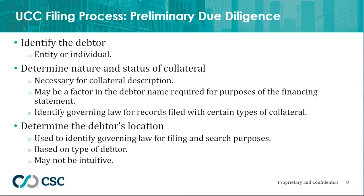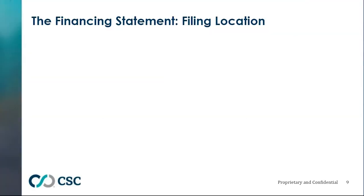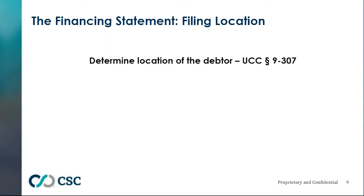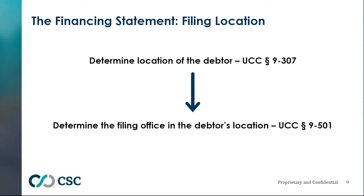Determining the filing location is a multi-step process. First, determine the law that governs perfection of the security interest, which is based upon the location of the debtor. Then once the debtor's location is determined, check the statute in that state to determine what office is the place for filing. The first step — determining the location of the debtor — is set forth in Section 9-307. Then look to the statute that governs the filing office within the state where the debtor is located.